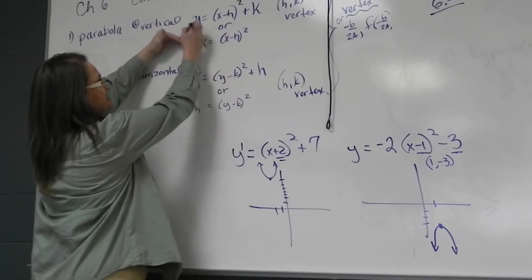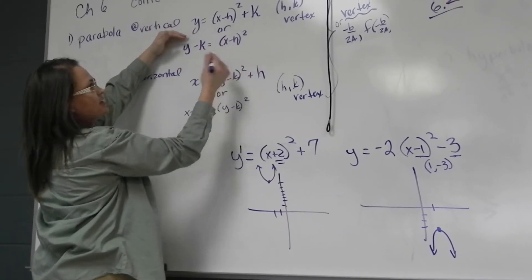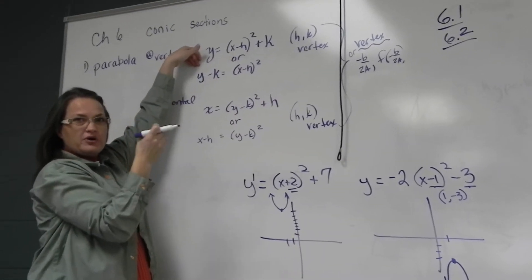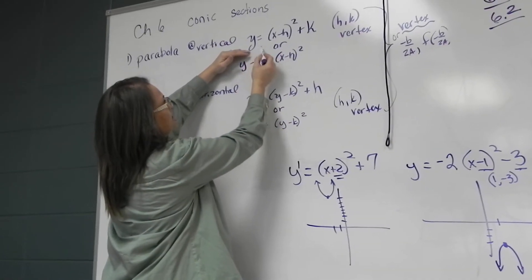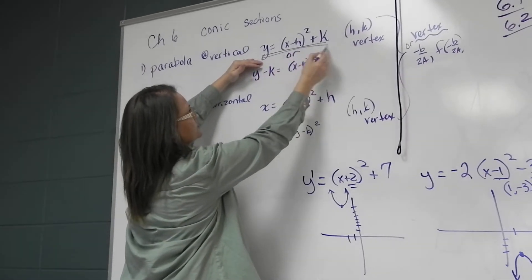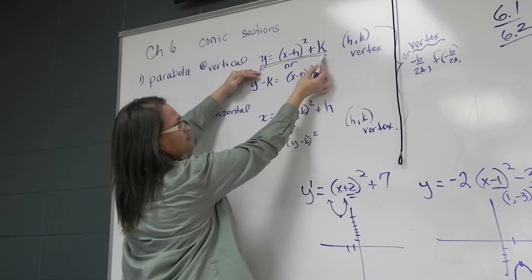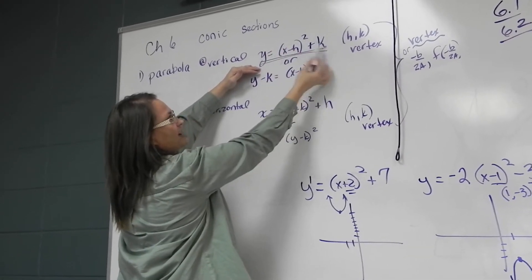They bring it over to the left-hand side. So I wanted you to see that this and this were the same thing, but it's just going to mess with our brain a little bit. We'll have this way we did it back in chapter 2 and 3, Y equals, and we had the vertical shift over to the right side, everything on the right side.